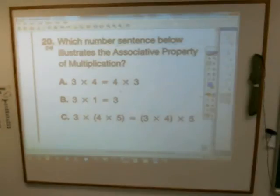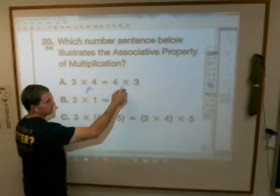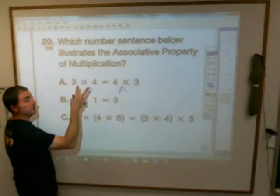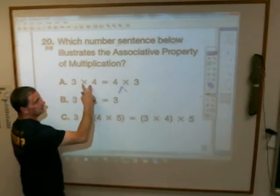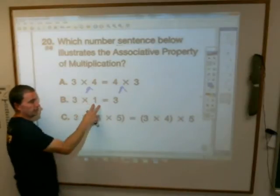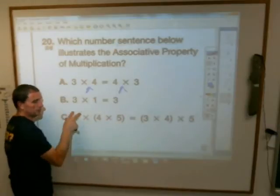Those are things you might have to study that for tomorrow, because maybe they won't ask you associative property, they might ask you this one, what property is this? That's the commutative, because the numbers have changed places. The numbers move, they commute from one thing to another, that's commutative property. Multiplying by one is the identity property, and this is the associative property.